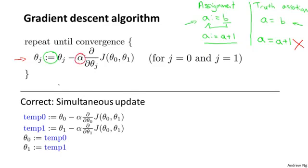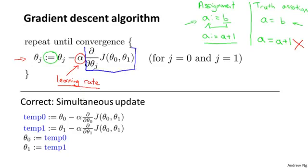This alpha here is a number called the learning rate. What alpha does is it basically controls how big a step we take downhill with gradient descent. If alpha is very large, that corresponds to a very aggressive gradient descent procedure where we're trying to take huge steps downhill. And if alpha is very small, then we're taking little baby steps downhill. I'll come back and say more about how to set alpha later. And finally, this last term here is a derivative term — I don't want to talk about it right now, but I will derive it and tell you exactly what it is later. Even if you aren't familiar with calculus, don't worry about it — I'll tell you what you need to know about this term.